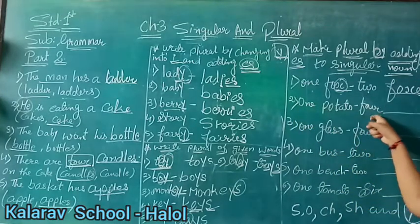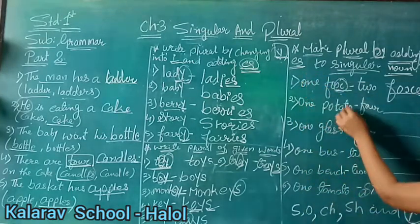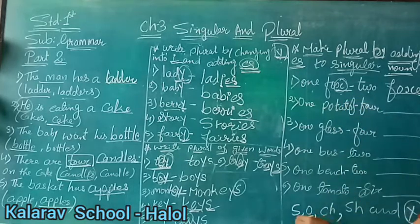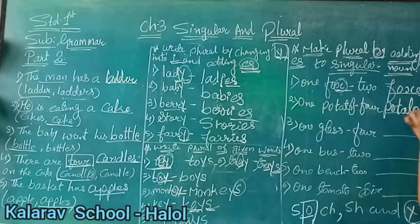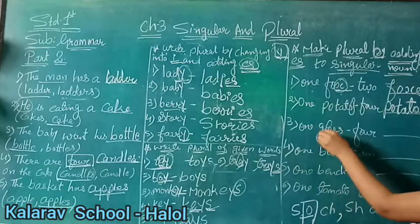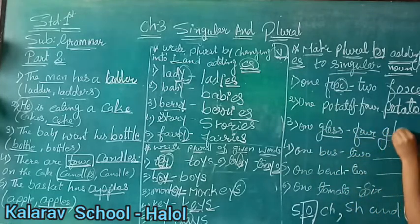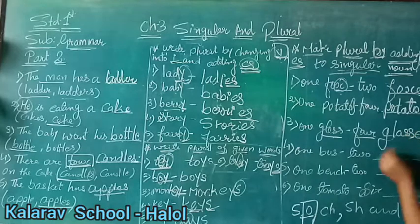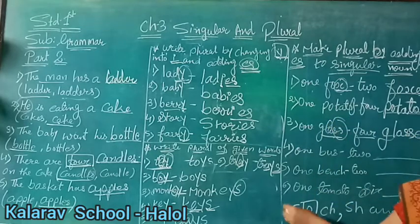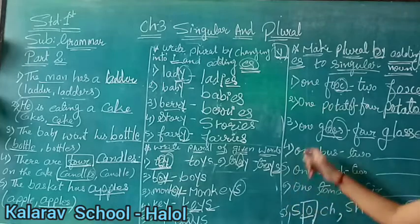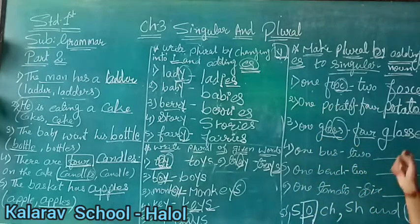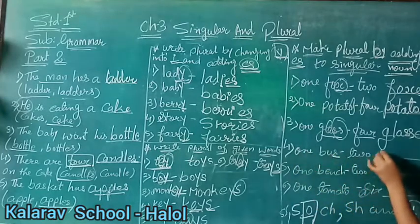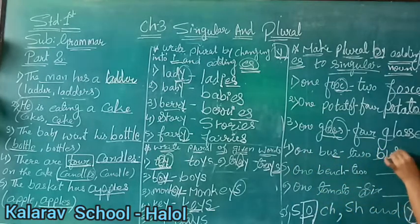Second number: one potato, four potatoes. We add ES here because it ends in O. Third number: one glass, four glasses. We add ES again - because here there is double S. When the singular noun ends in S, we write ES in the plural. Next: one bus, two buses - again ES is added.